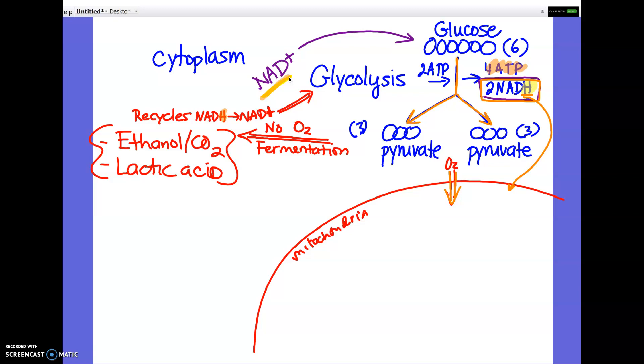So fermentation in bacteria makes ethanol and carbon dioxide gas. The pyruvate gets turned into ethanol and carbon dioxide is released. In us, we make lactic acid. So it still takes the pyruvate, turns it into lactic acid, recycles the NADH back to NAD+. Your muscles may burn a little bit, but it gives your cells a few more minutes worth of ATP before they would run out completely.